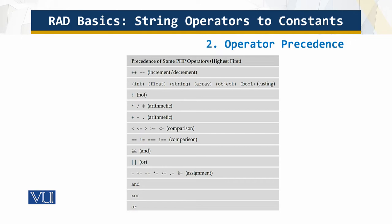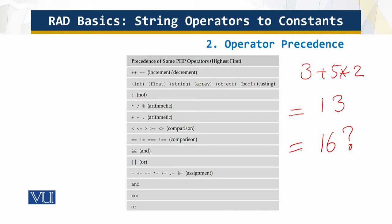What is the meaning of operator precedence? If I have three plus five multiplied by two, should the answer be 13 or 16? If addition has higher precedence, I get 8 times 2 which is 16. But if multiplication has higher precedence, I get 5 times 2 equals 10, plus 3 equals 13. We cannot leave these things to be processed ambiguously — that is what operator precedence defines.